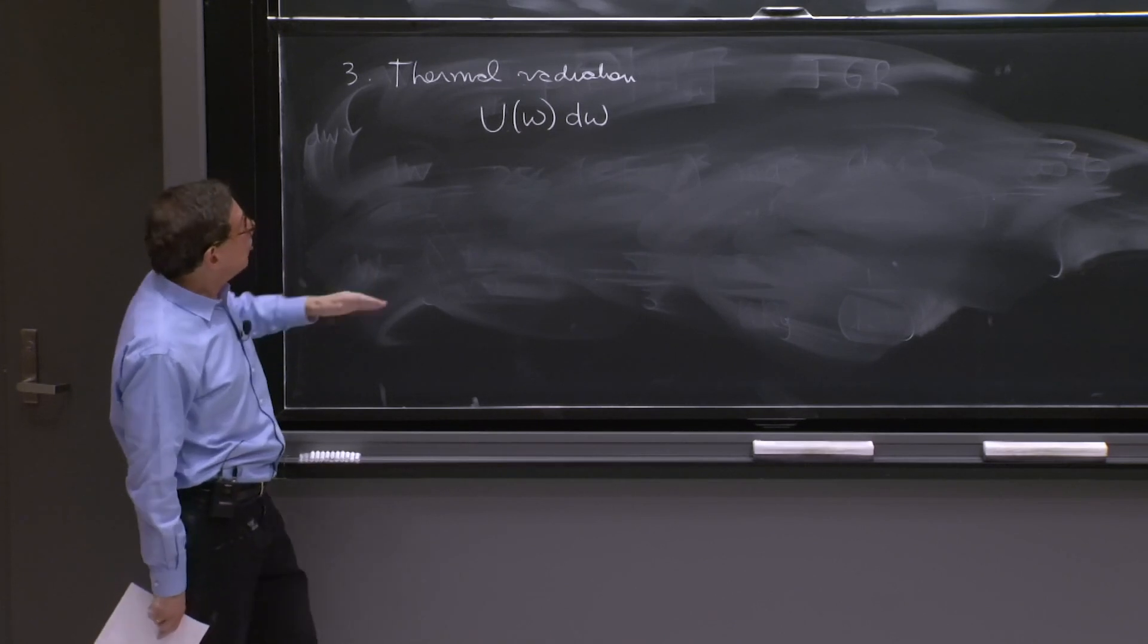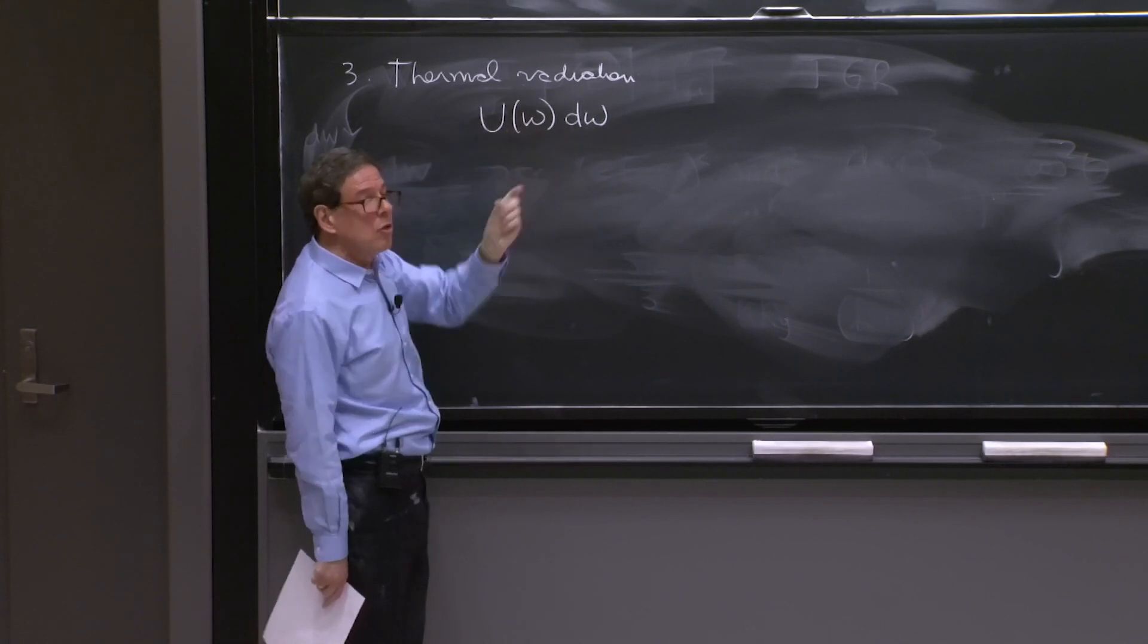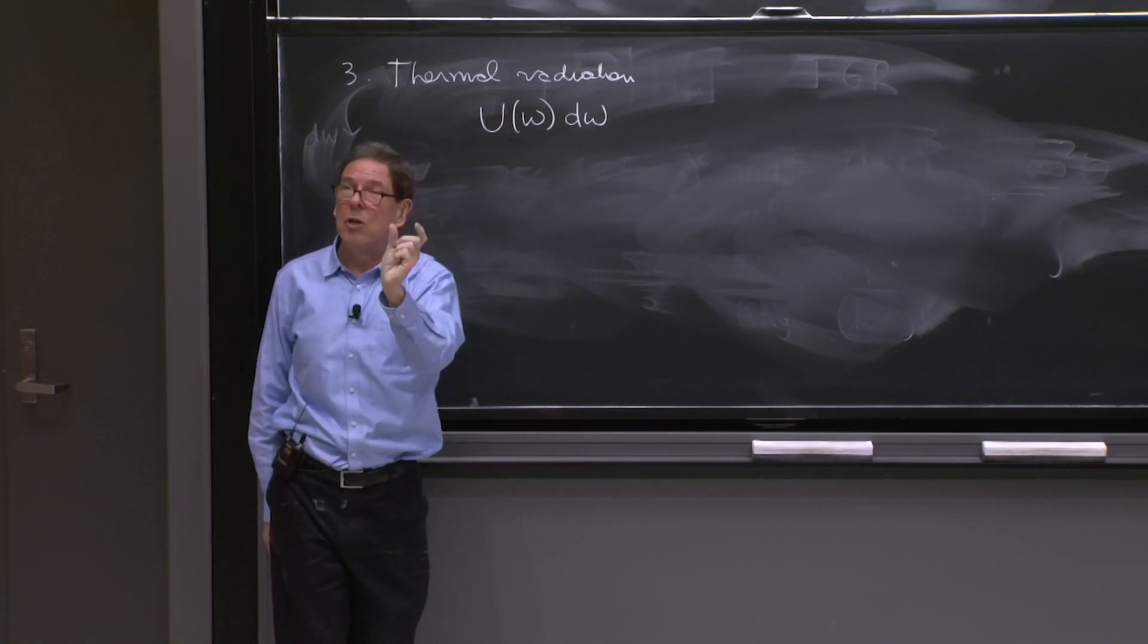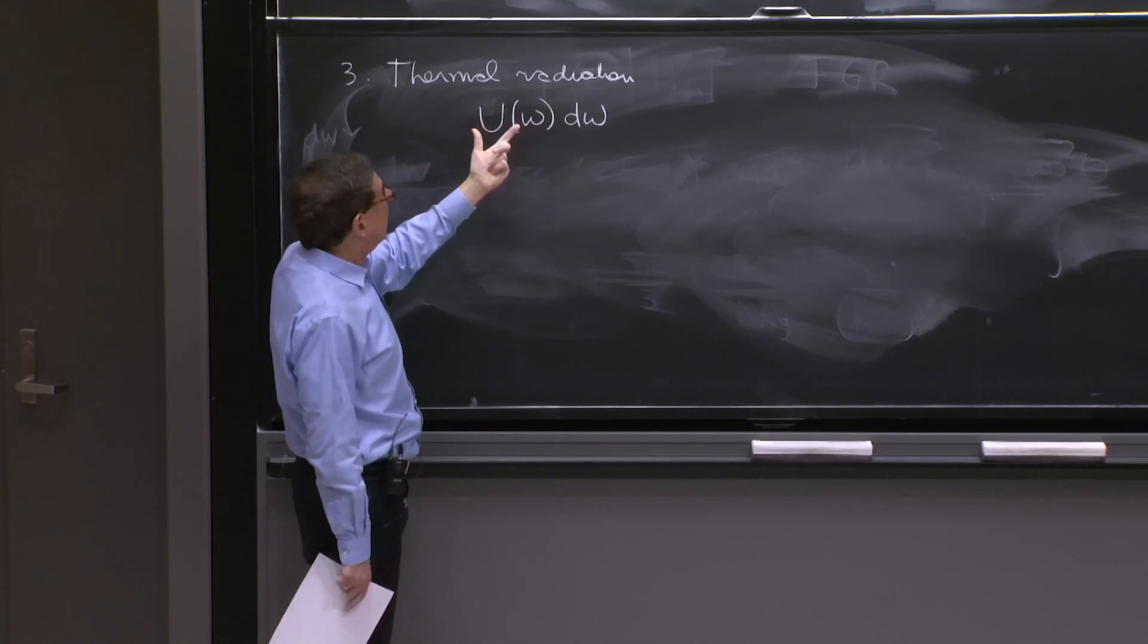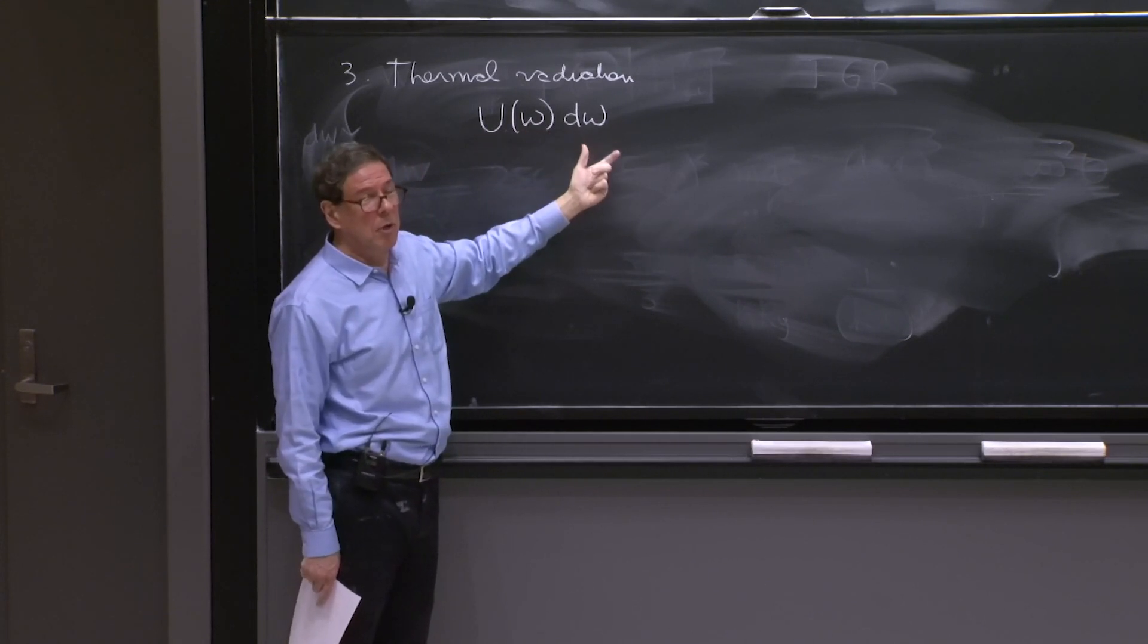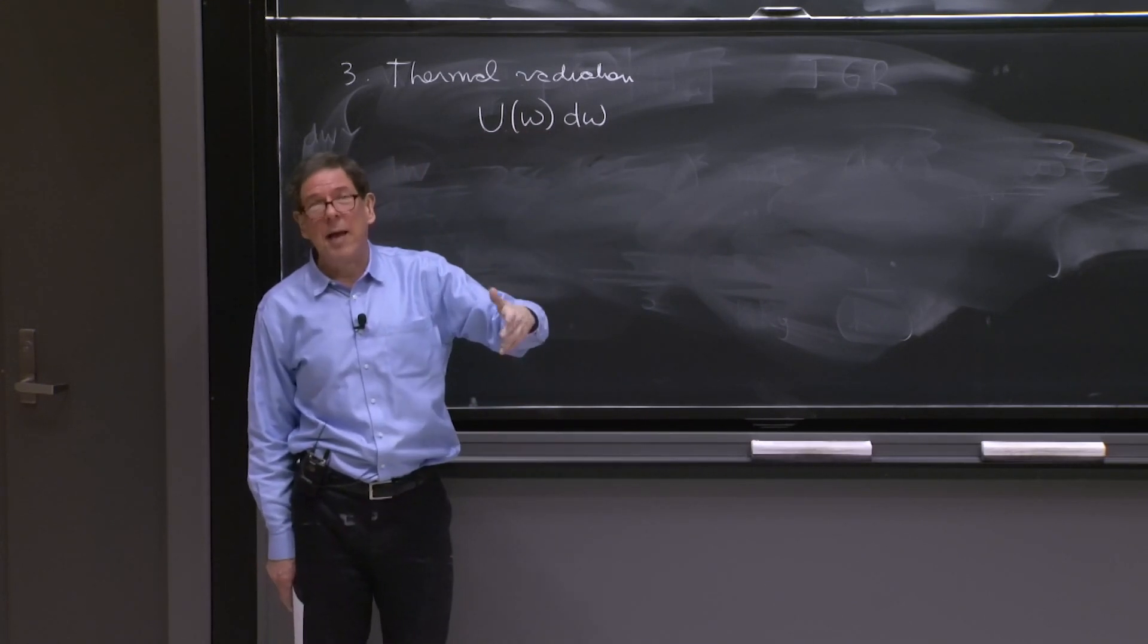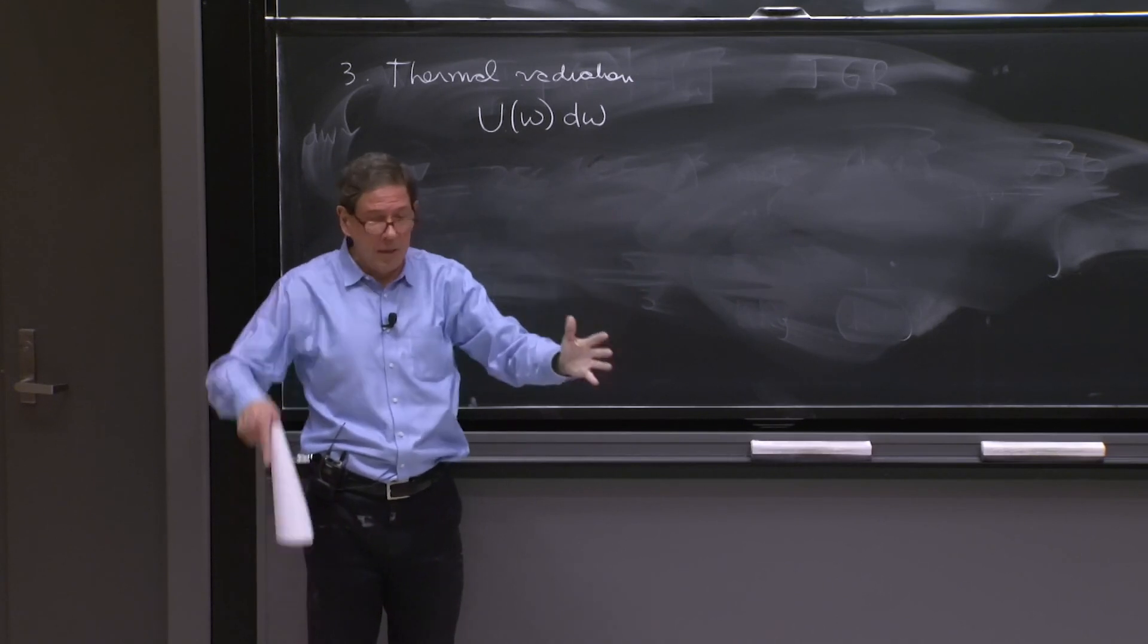But you even must be more precise. It is the energy per unit volume in a frequency range, because the energy is different if your black body cavity is this room or it's a little box.